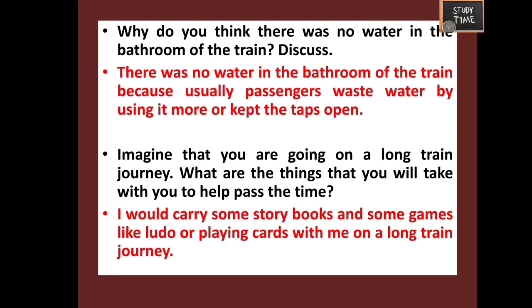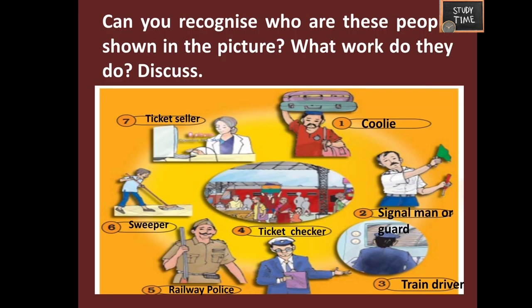On a long train journey, can you recognize who are the people shown in the picture and what work do they do? The first picture is a coolie, the second is a signal man, the third is a train driver, the fourth is a ticket checker, the fifth is railway police, the sixth is a sweeper, and the seventh is a ticket seller.